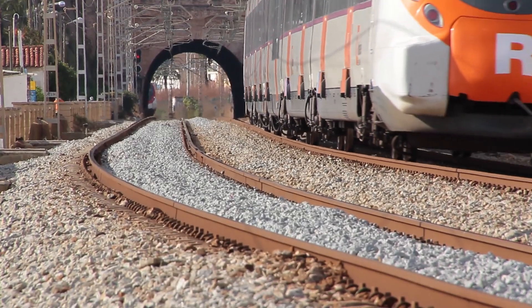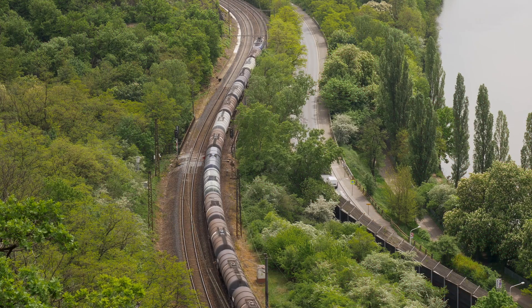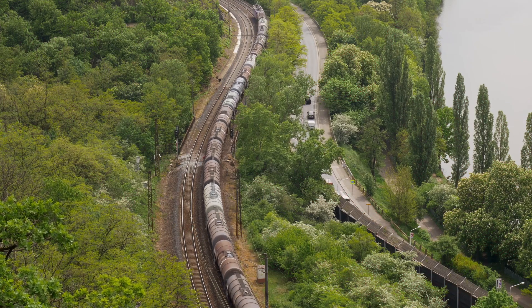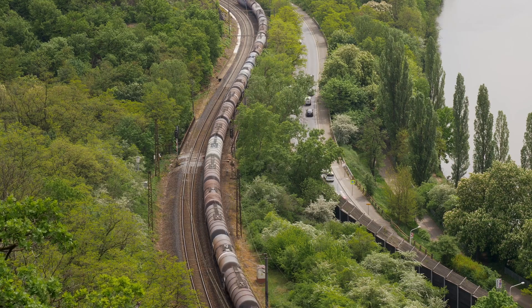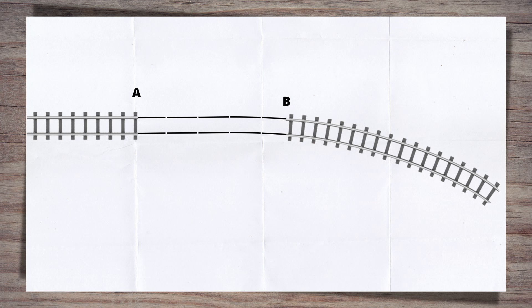Transitions are used to link the constant geometry elements, straights and curves, together. They allow the smooth transition between different levels of radii and cant. Their length is the key feature that manages this comfortably for both passengers and freight.